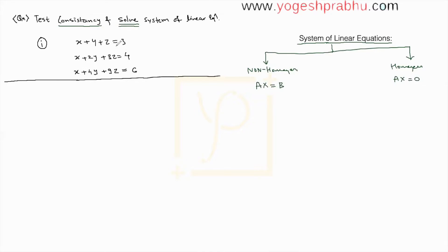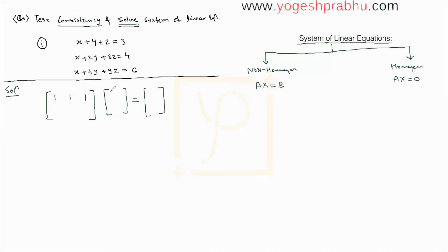We are supposed to find values of x, y, and z that satisfy all three equations simultaneously. To solve this, we first write the system of equations in matrix form. The first matrix is the coefficient matrix — for the first equation it is 1, 1, 1. Then there is the variable matrix containing x, y, z. Multiplying row by column gives us the original equation. For the second equation the coefficients are 1, 2, 3 with right hand side 4; for the third, 1, 4, 9 with right hand side 6.